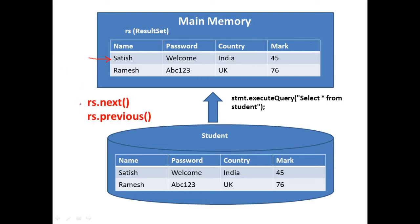There are two key methods for ResultSet. rs.next() positions the cursor to the next record; rs.previous() positions the cursor to the previous record. When there are no more records, rs.next() returns false. Similarly, rs.previous() returns false when there are no more previous records. So rs.next() and rs.previous() return false when the end or beginning of the table is reached.